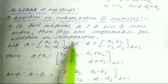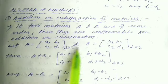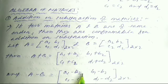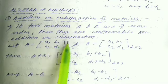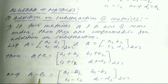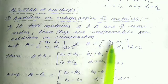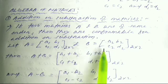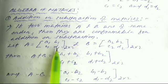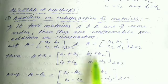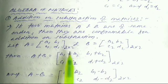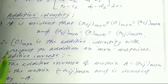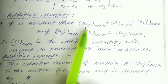For A + B, we add the corresponding elements: a1+a2, b1+b2, c1+c2, d1+d2. Similarly, for subtraction, A − B = [a1−a2, b1−b2; c1−c2, d1−d2], which is also of order 2×2. We add or subtract the corresponding elements at the same positions.